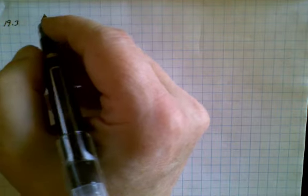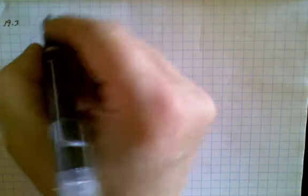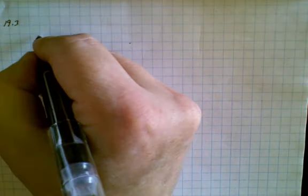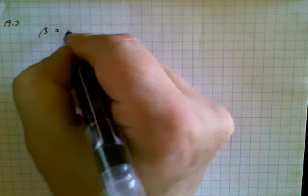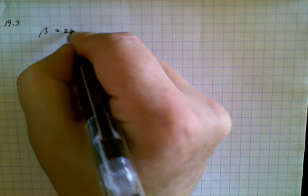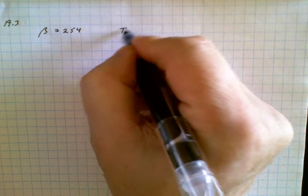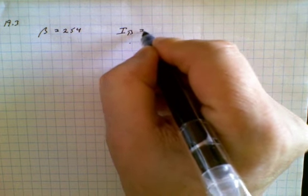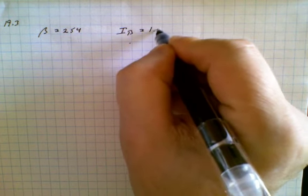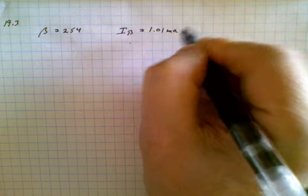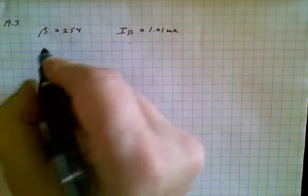In question 19.3, we're told that the beta of a transistor is equal to 254. We're also told that the base current is equal to 1.01 milliamps. From this, we're asked to find IC, the collector current.